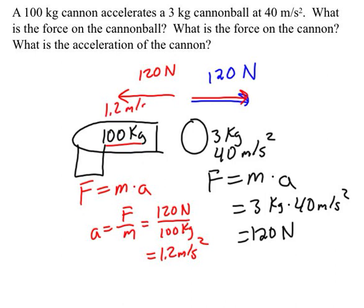Both the cannon and cannonball are feeling the same force, but the cannonball — being much lighter — is accelerated at a much greater rate. Whereas the cannon, which has a much greater mass, is accelerated much less. So they're both feeling the same force but experiencing different accelerations.